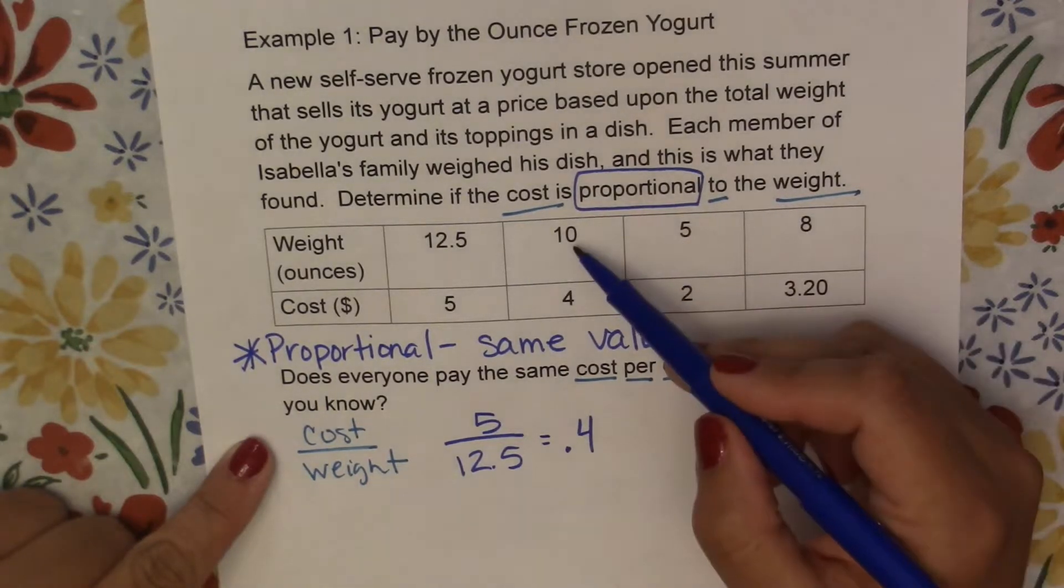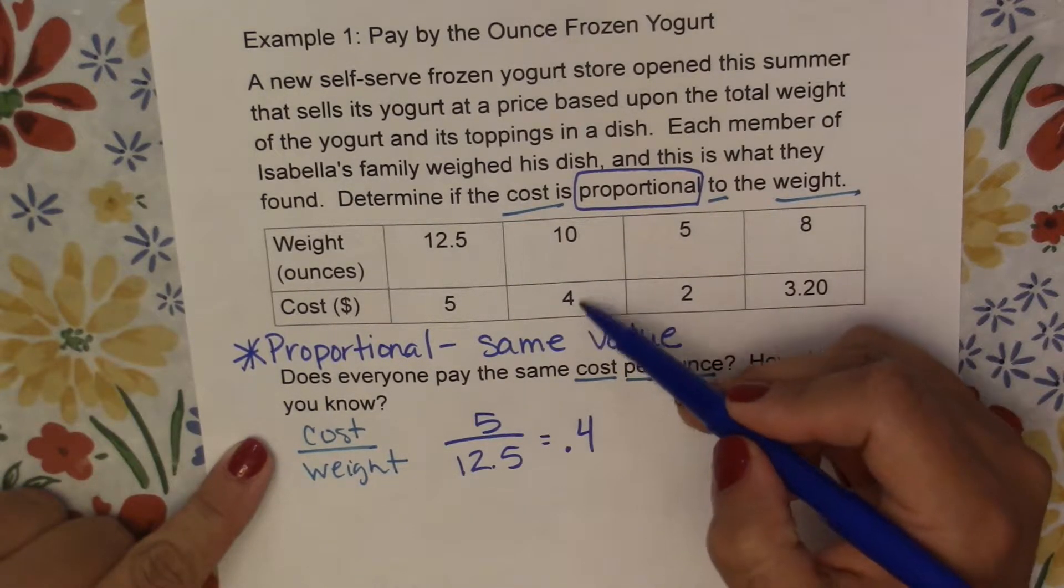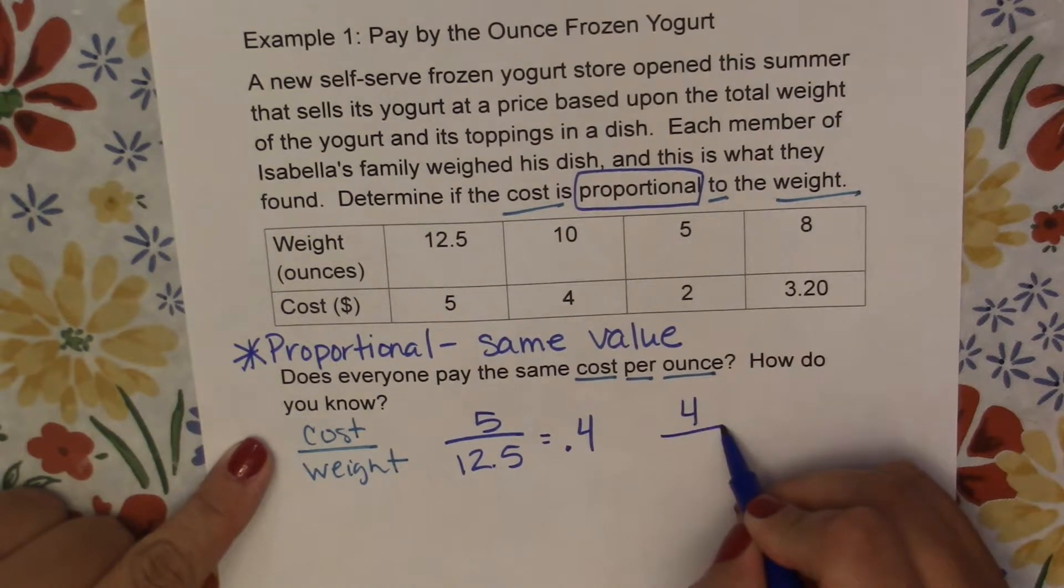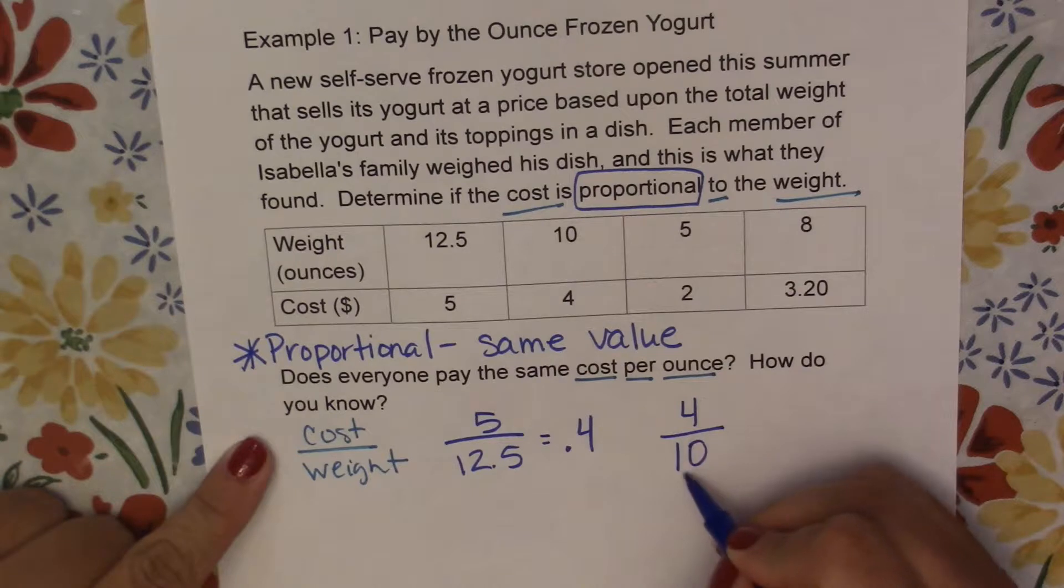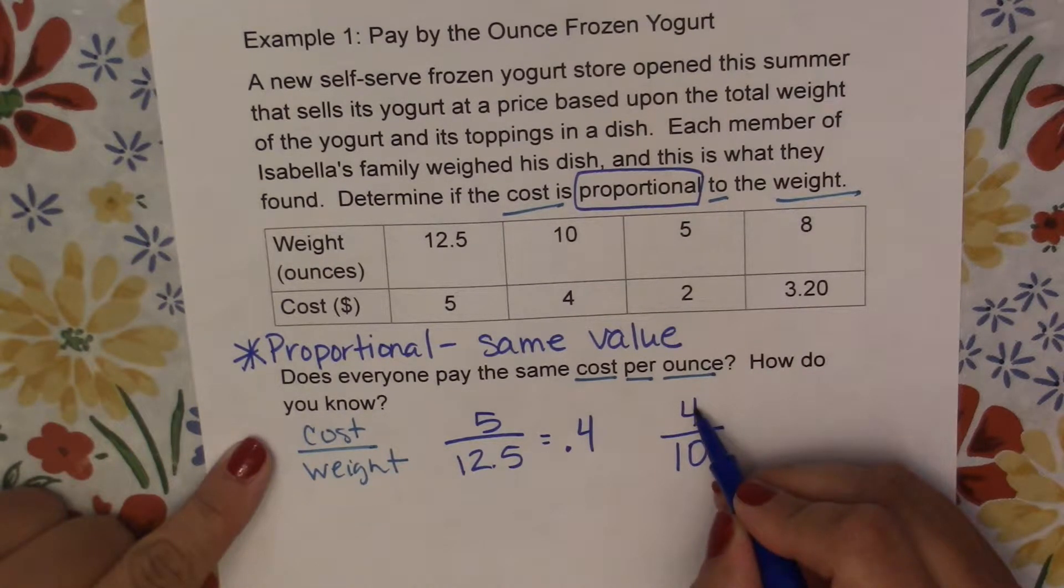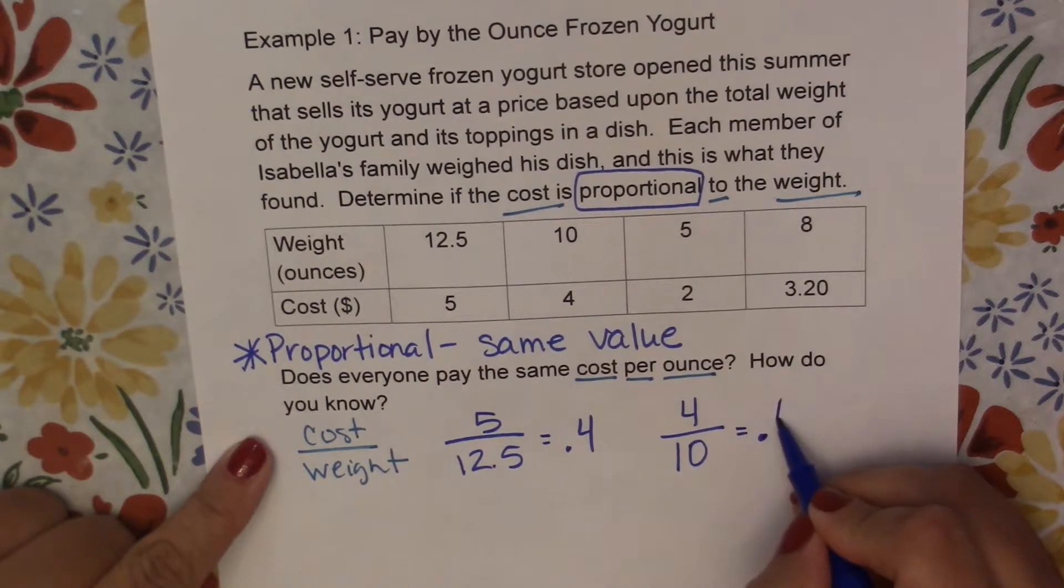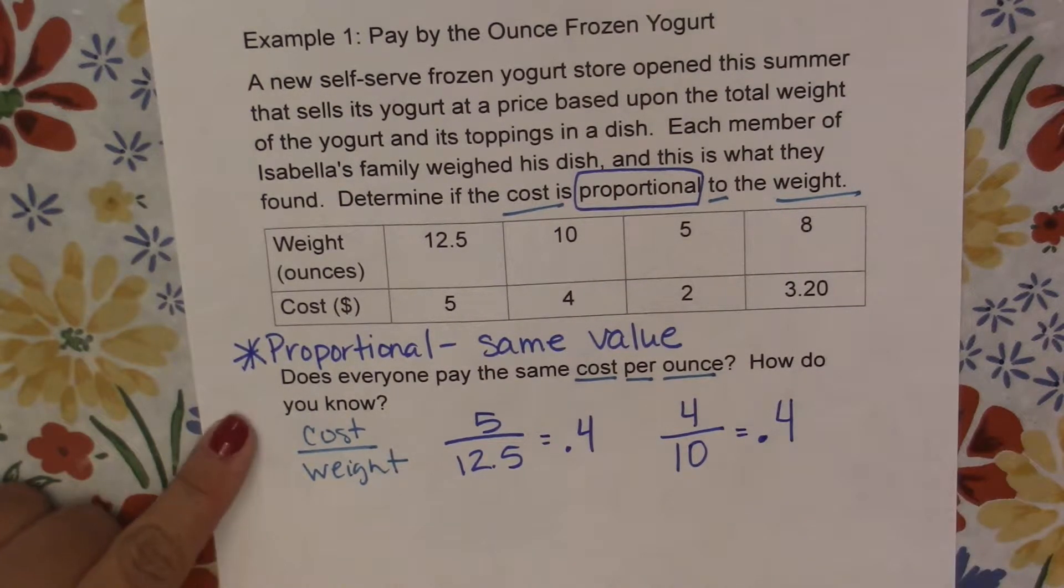Alright, our second one here. Our cost was 4 and our weight was 10. Again, to get this to a 1, so we're finding that unit rate, we would take 10 divided by 10. What we do to the bottom we have to do to the top, so we're going to do 4 divided by 10, which again gives us 0.4 or 40 cents.